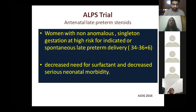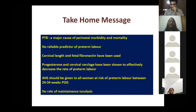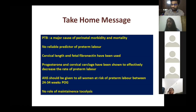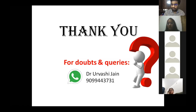The ALPS trial (Antenatal Late Preterm Steroid trial) investigated steroid administration from 34–37 weeks and found decreased need for surfactant and decreased serious neonatal morbidity. In summary: preterm birth is a major cause of perinatal morbidity and mortality; there is no reliable predictor, but cervical length and fetal fibronectin have high negative predictive value. Progesterone and cervical cerclage effectively decrease preterm labor rates. Antenatal steroids should be given to all women at risk from 23 weeks to 36 weeks. There is no role for maintenance tocolysis — it is only used to allow time for steroid administration and in utero transfer.